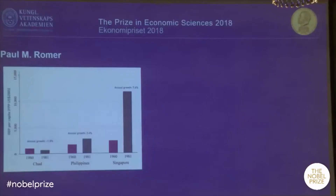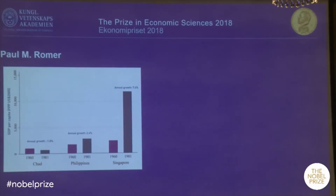Paul Romer in the 1980s puzzled over the following type of data. Here you see growth experiences of three countries — just examples, but they illustrate something important. Chad grew between 1960 and 1981 by minus two percent per year, Singapore grew by almost plus eight percent per year, and the Philippines were in the middle, growing like the world as a whole. You see huge income gaps opening up over the course of only two decades, with staggering consequences for human welfare.